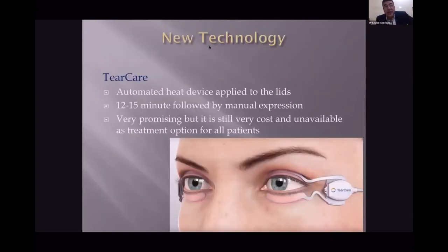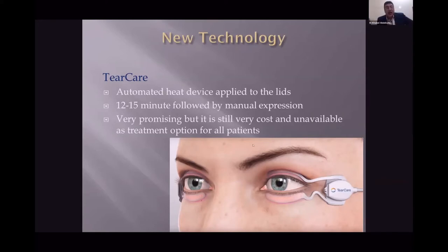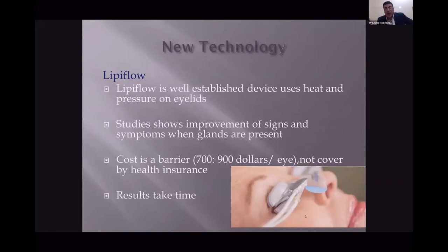New technology for treating dry eye, especially meibomian gland dysfunction, includes TearCare — an automated heat device applied to the eyelid for 15 minutes followed by manual expression — which is very promising but costly and not widely available. LipiFlow is a well-established device that uses heat and pressure on the eyelid; studies show improvement of signs and symptoms when glands are present, but the cost of $700 to $900 per eye is a barrier.